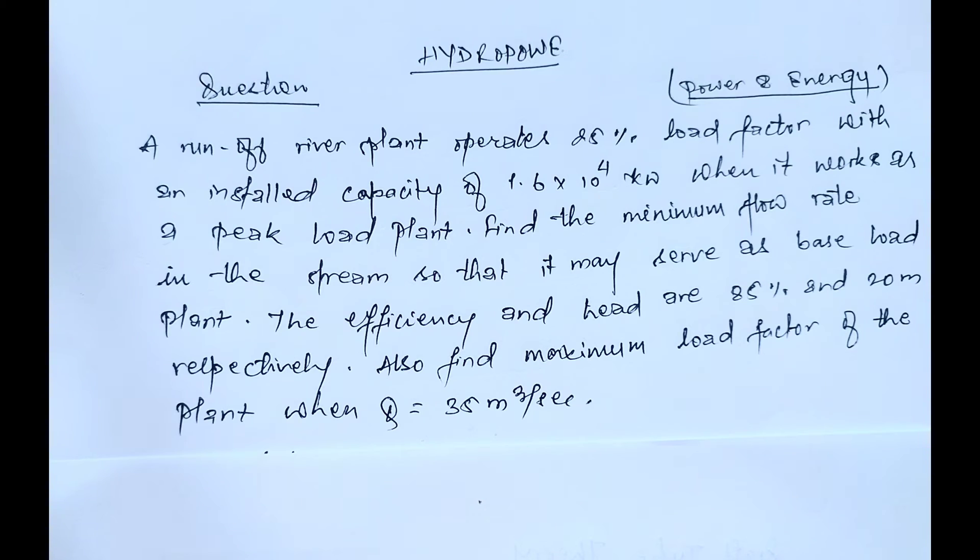Hello everyone, welcome to Hydropower. Today we'll solve a numerical problem related to power and energy estimation. The given question is: a run-off river plant operates at 25% load factor with an installed capacity of 1.6 × 10⁴ kilowatts.